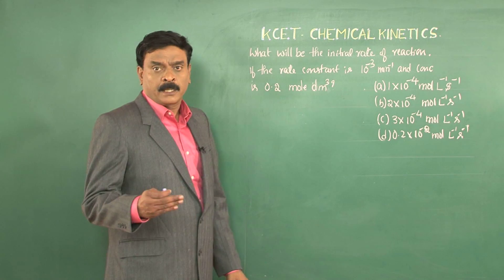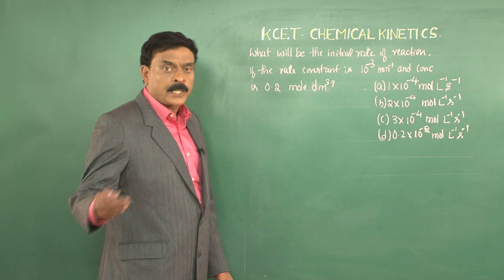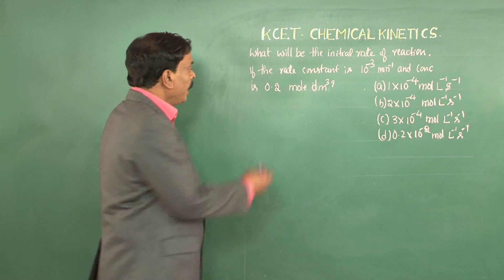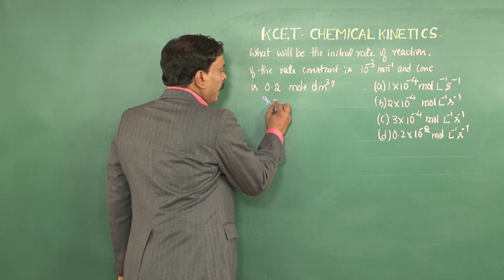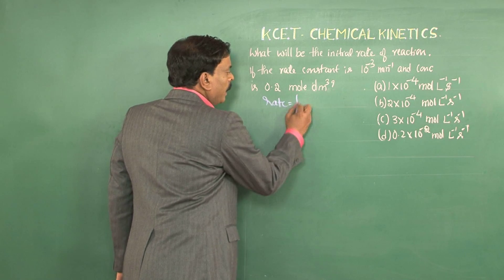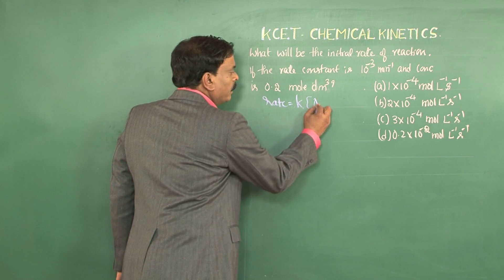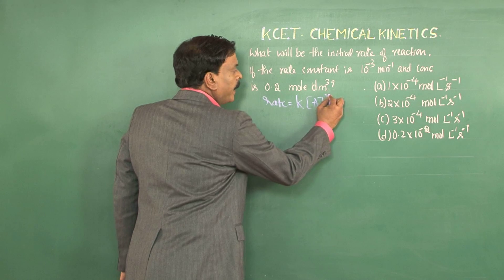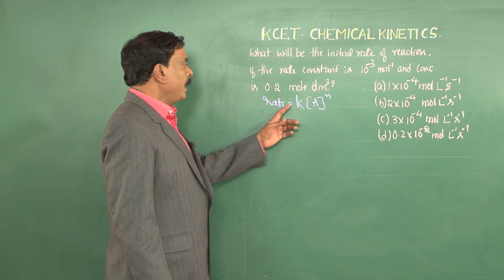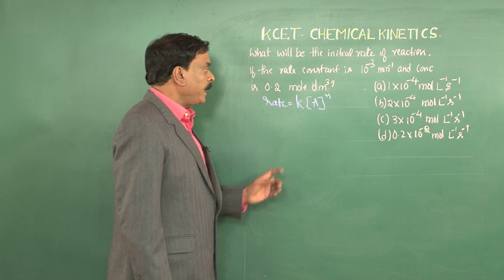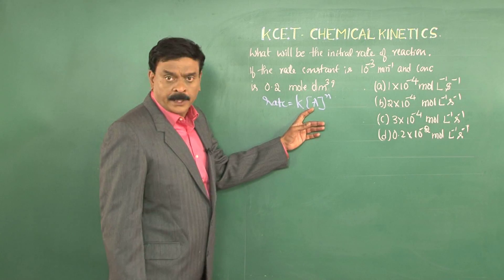How do we get to know the unit of a reaction of a particular order? Here, you should note that rate is equal to small k into concentration of A to the power n. k is the rate constant, A is the concentration, n is order of the reaction.